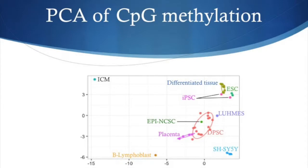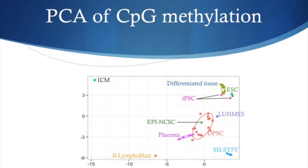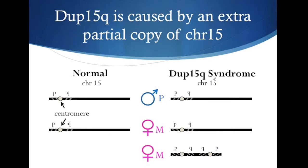If you take a look at this PCA plot from figure 1c of the paper, you can see that ESCs and iPSCs cluster closer to the differentiated tissues of brain and liver than they do to early life tissues such as placenta. Interestingly, we found that DPSCs have a much closer methylation pattern to placenta than most other cell types we assayed, which led us to investigate DPSCs as a potential model for methylation in neurodevelopmental disease states.